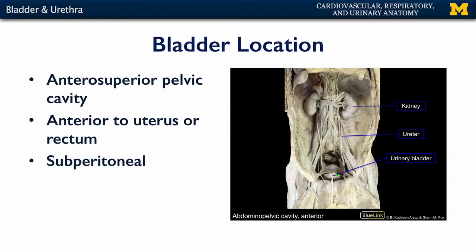The bladder itself, when full of urine, is capable of expanding out of the pelvic cavity and into the abdominal cavity. The bladder is just anterior to the uterus if the uterus is present, and there is a vesicouterine pouch of the peritoneum between the two. It's also anterior to the rectum. In males, there's a rectovesicular pouch because there's no uterus present. The bladder is subperitoneal because the parietal peritoneum covers over the majority of the bladder in the pelvic cavity.